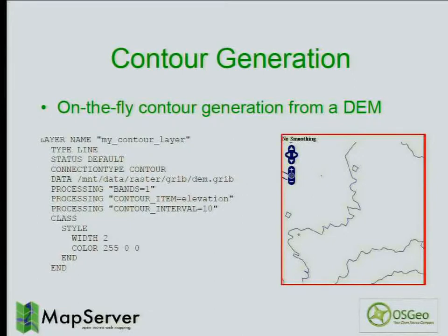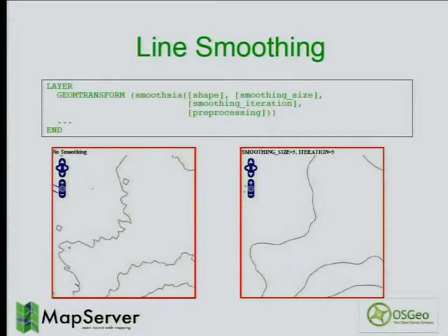Some of you may have used the GDAL contour command-line utility in the past. We've taken that algorithm and brought it into MapServer. Now you can have a layer with connection type contour, specify a DEM raster band, and it will generate contours on the fly based on the elevation and interval you specify. The contours can be a bit jagged when generated by GDAL contour, so we added line smoothing to make them look more appropriate for map rendering.